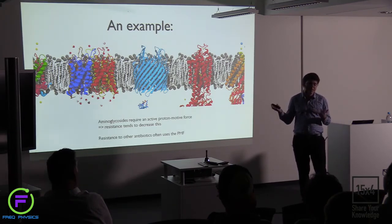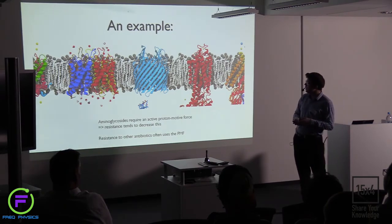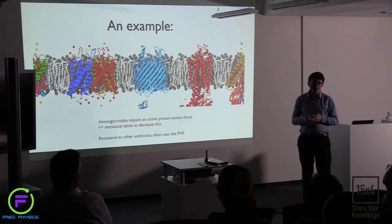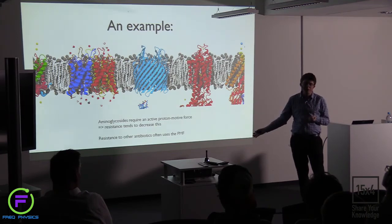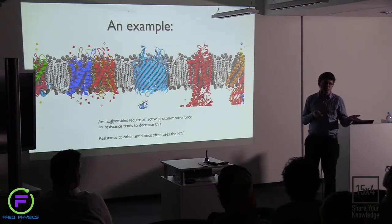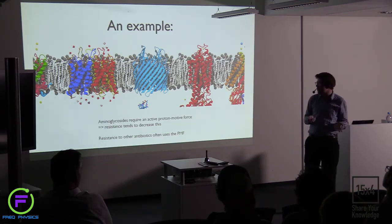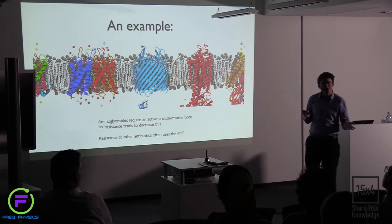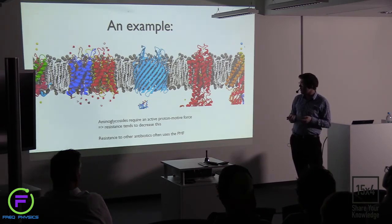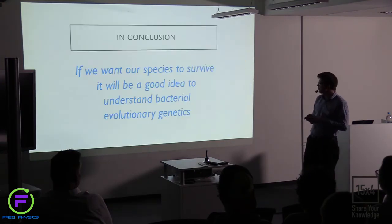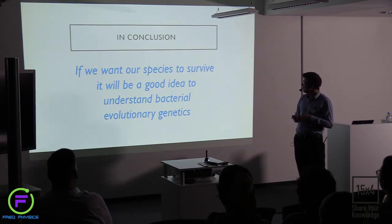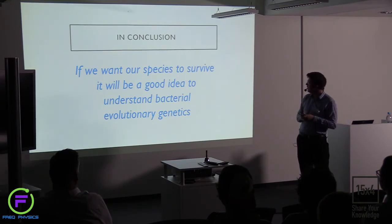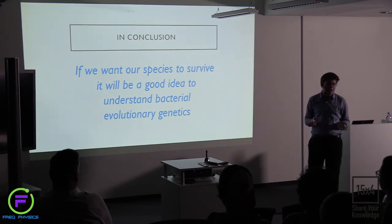Different drugs like penicillins can be pumped out with the use of the proton motive force. So if you use both of these drugs in combination, the bacterium has a real problem — in order to adapt to one it tries to reduce the proton motive force, but in order to adapt to the other it needs to use the proton motive force. The moral of the story is: if we understand evolution, we can actually prevent it happening, or limit it, or kill the bacteria much more efficiently. Using two drugs at once is a trick we've learned by studying the kinds of mutations that happen in evolution. In conclusion, if we really want to understand these processes and survive the growth of the superbugs, it'll be a really good idea to understand bacterial evolutionary genetics.